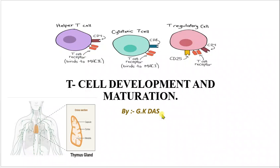Hello friends, welcome to Biology Level. Today we are going to discuss T-cell development and maturation. We know the precursor cell for the T-cell — the hematopoietic stem cell — is present in the bone marrow, but T-cell development and maturation happens in the thymus. I have a special picture that can give you a clear concept about T-cell development and maturation in the thymus.